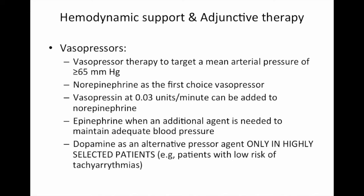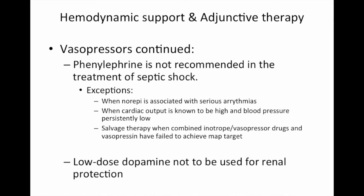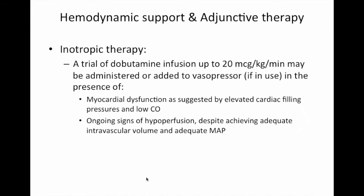Commonly used vasopressor targets include achieving a mean arterial pressure of greater than or equal to 65 millimeters of mercury. Norepinephrine should be used as the first-choice pressor; vasopressin can be added; epinephrine should be next; and rarely, if ever, dopamine. Phenylephrine is generally not recommended, and low-dose dopamine is no longer recommended either.